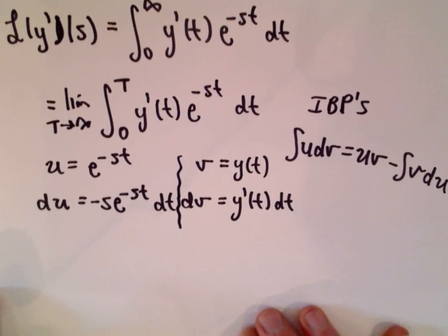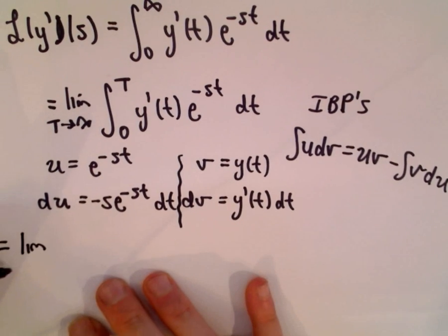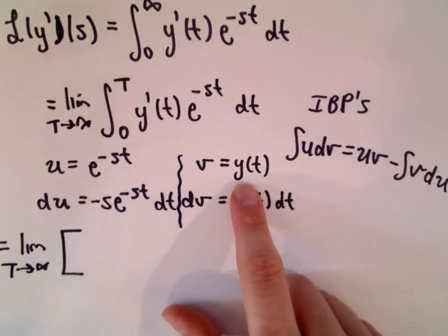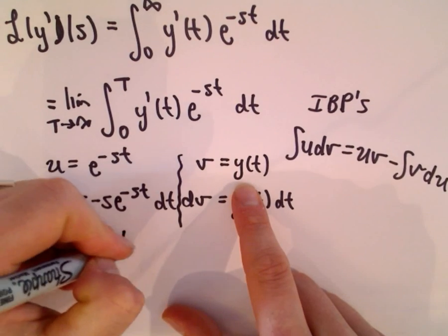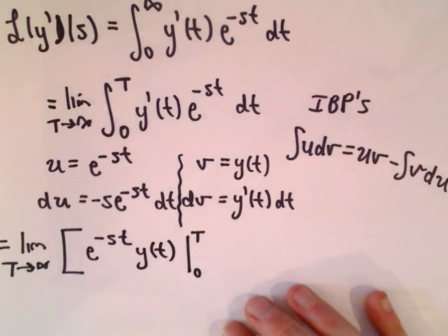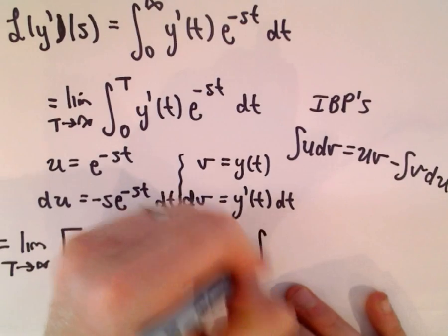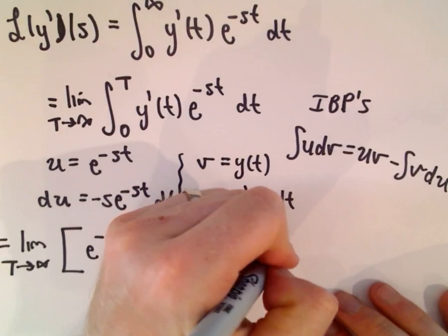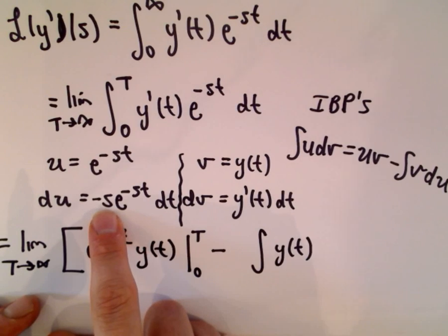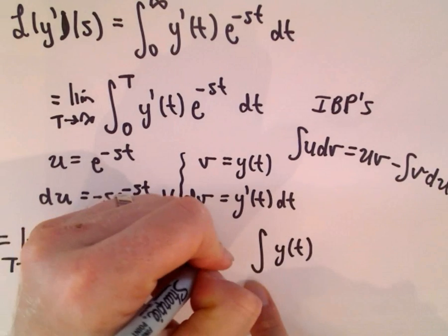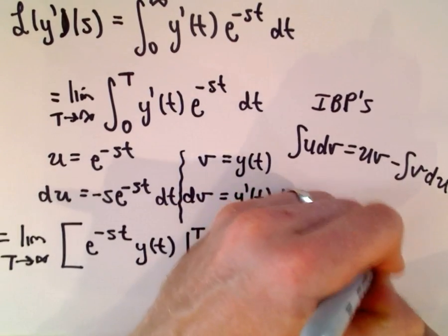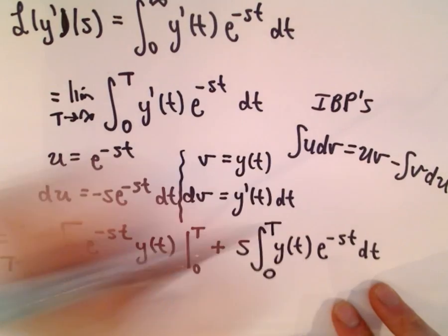Now filling in the integration by parts formula, we have the limit as T→∞ of: [e^(-sT) · y(t)] from 0 to T, minus the integral from 0 to T of y(t) · (−s · e^(-st)) dt. Factoring out the negative s gives us plus s times the integral from 0 to T of y(t) · e^(-st) dt.